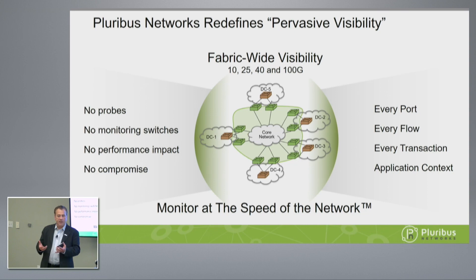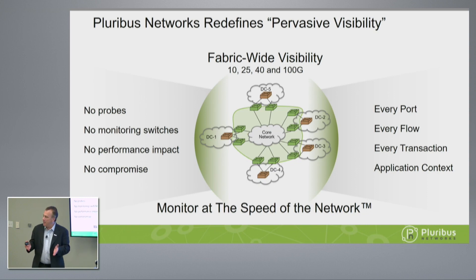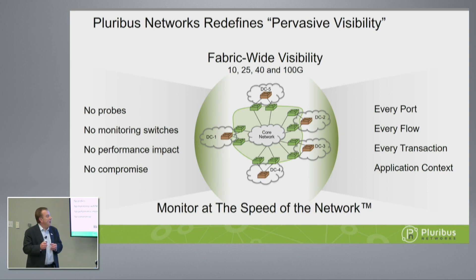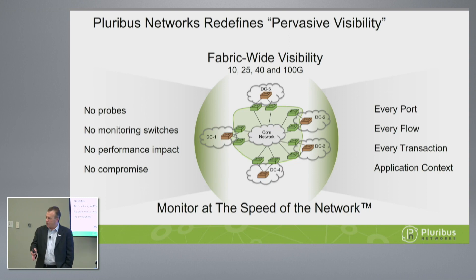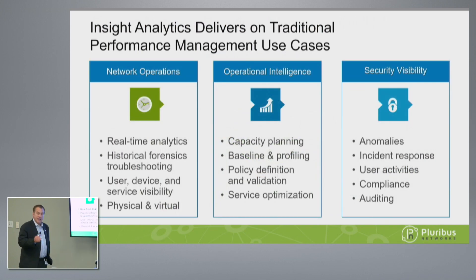The second challenge of monitoring networks today is speed. Most probes are running at 10 gig, and you're not even getting wire speed out of that. What we're able to deliver is monitoring across the entire network at the speed of the network. If you're running 100 gig ports, you're able to get 100 gigs worth of data flows to understand what's going on. We're seeing every flow, every transaction, everything that's crossing the network, so you get visibility into north-south traffic but also deeper visibility into east-west traffic environments.